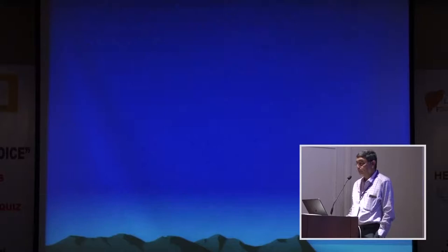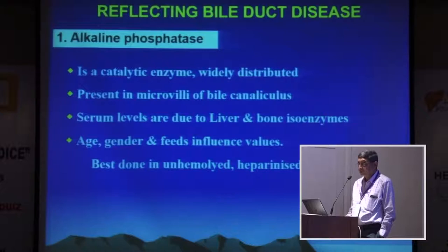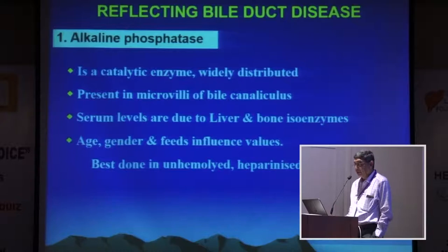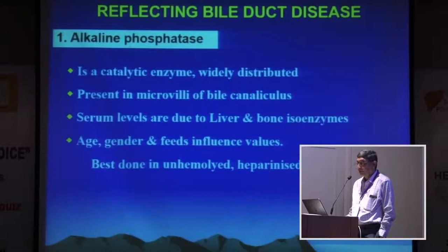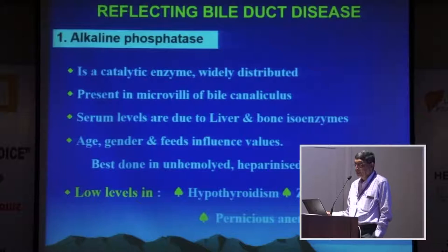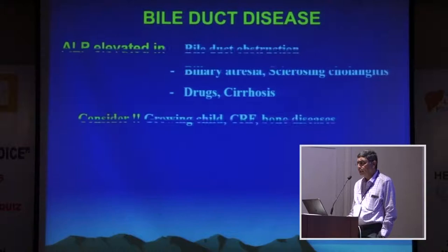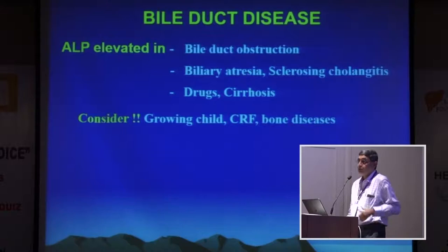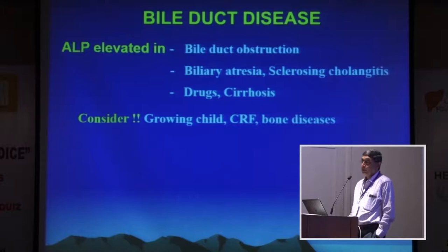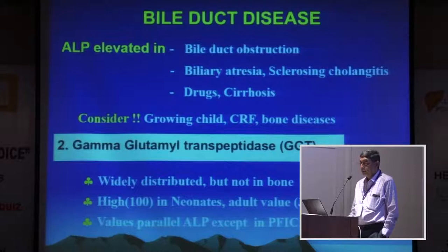Alkaline phosphatase is not very specific for the liver and is best measured in a fasting state, but age, gender, and feeding all influence its levels. Low levels are seen in hypothyroidism, zinc deficiency, and pernicious anemia. In bile duct disease, alkaline phosphatase is elevated, as well as in cirrhosis. If uncertain it's liver disease, also think of a growing child, rickets, and chronic renal failure. GGT is much more specific — it's widely distributed but not present in bone, so for liver disease today GGT is far more important than alkaline phosphatase.